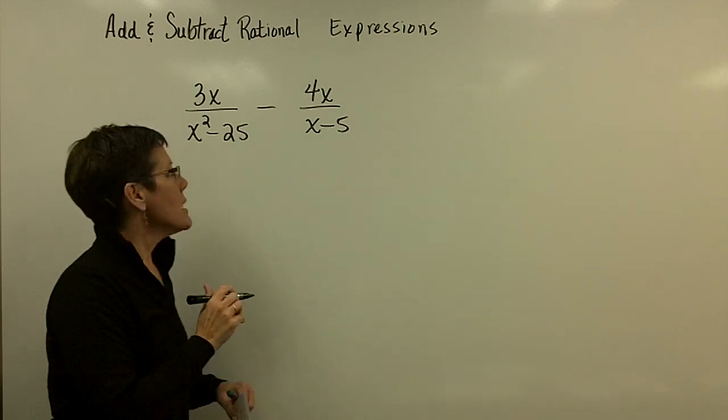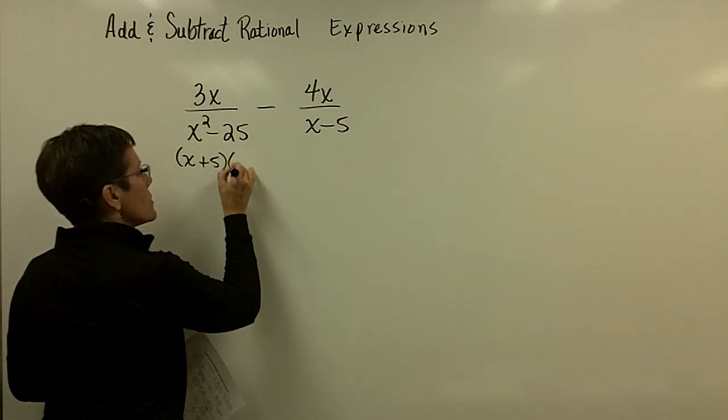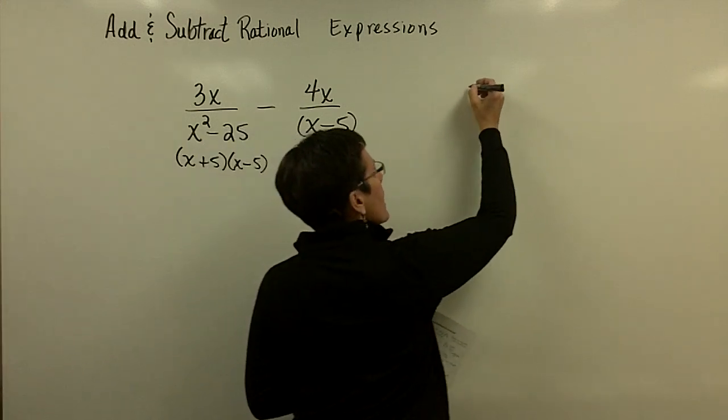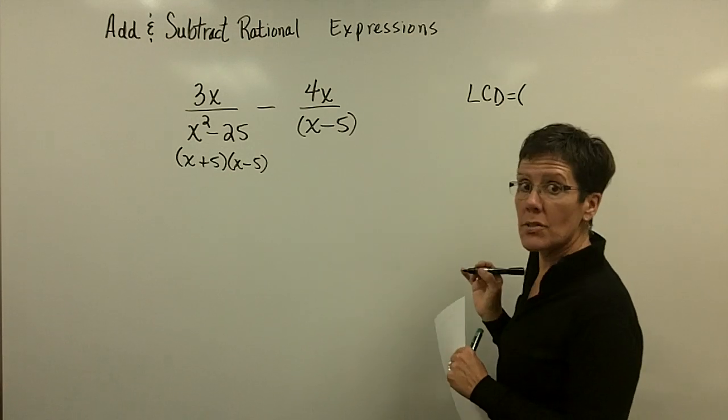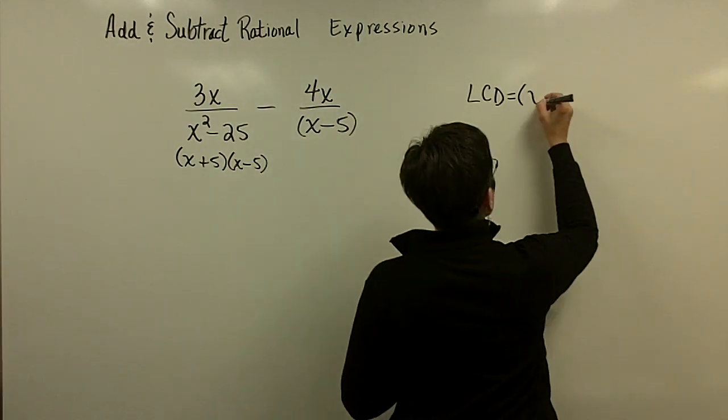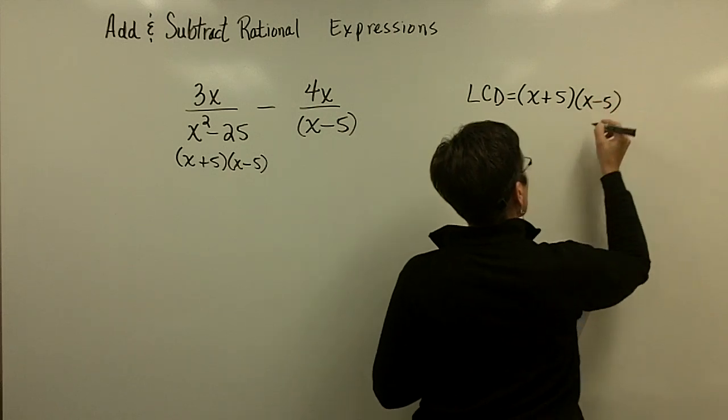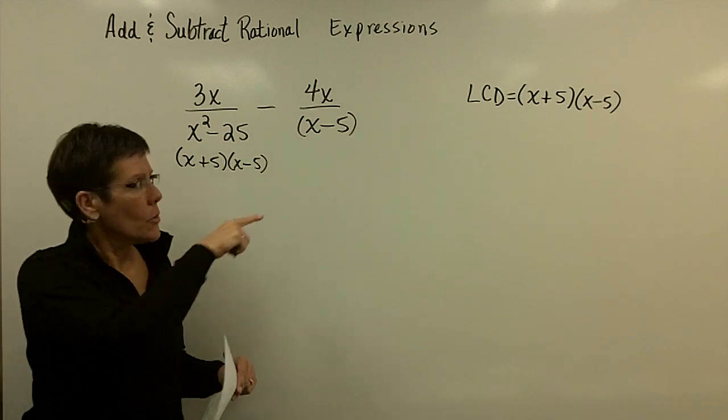So this is the difference of squares, and this one cannot be factored. And you write your least common denominator as each factor the greatest number of times it occurs in one denominator. So I just need both the x plus 5 and the x minus 5, because the x minus 5 occurs once here and once here. That's the greatest number of times; I don't use it twice.